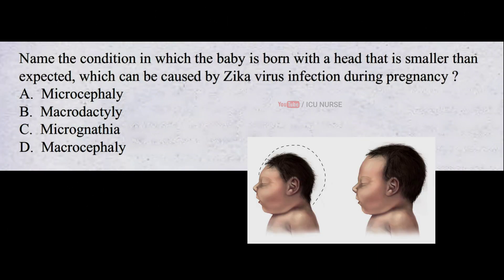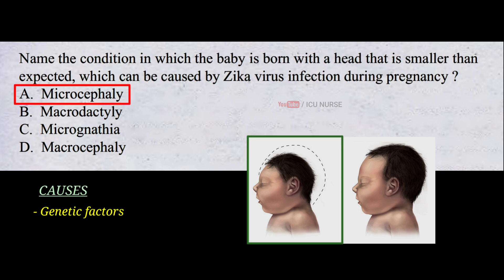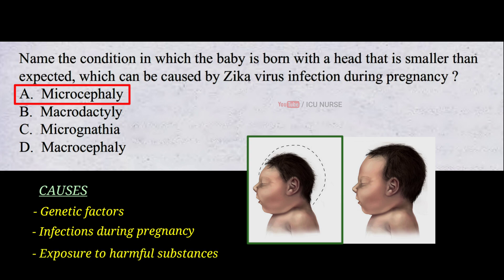Name the condition in which the baby is born with a head that is smaller than expected, which can be caused by Zika virus infection during pregnancy. A. Microcephaly. B. Macrodactyly. C. Micrognathia. D. Macrocephaly. And the correct answer is A. Microcephaly is a condition where a baby's head is much smaller than expected. This can be caused by genetic factors, infections during pregnancy, or exposure to harmful substances, resulting in developmental delays and intellectual disabilities. There is currently no cure for microcephaly.